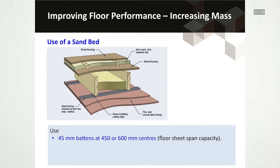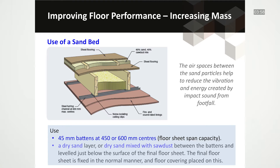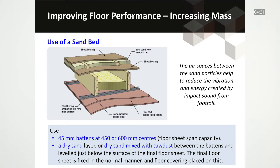A sand bed can also be utilized. The air spaces between the sand particles help to reduce the vibration and energy created by impact sound from footfall. For this method, it is recommended to use 45mm battens at 450 or 600mm centres, depending on the thickness of the flooring used. Then a dry sand layer, or dry sand mixed with sawdust layer, is added between the battens, and levelled just below the surface of the final floor sheet. The final floor sheet is then fixed in the normal manner.